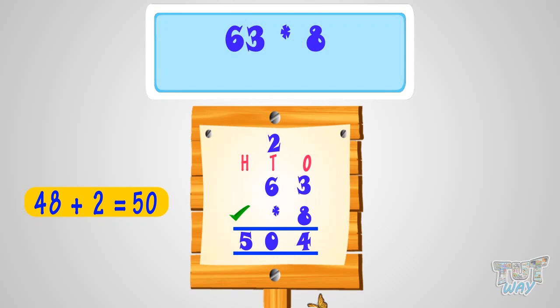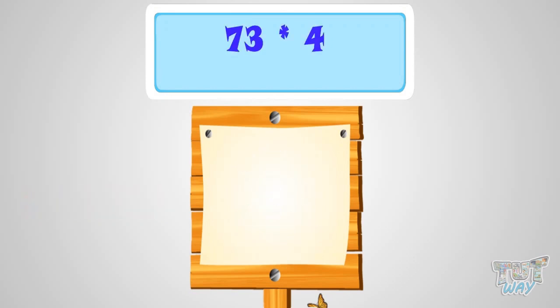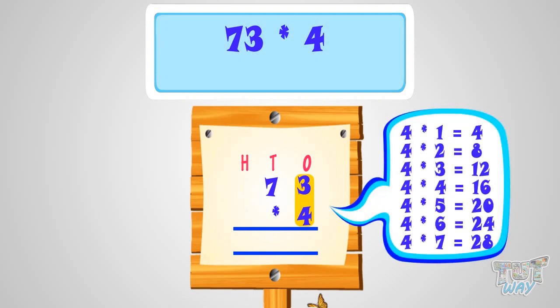Now, let's take another example. We have to multiply 73 with 4. First, write it like this. First of all, multiply 4 with 3. 4 multiplied by 3, we get 12. So, write the ones place digit at ones place in the product. And carry over the tens place digit to the next place. That is, tens place.